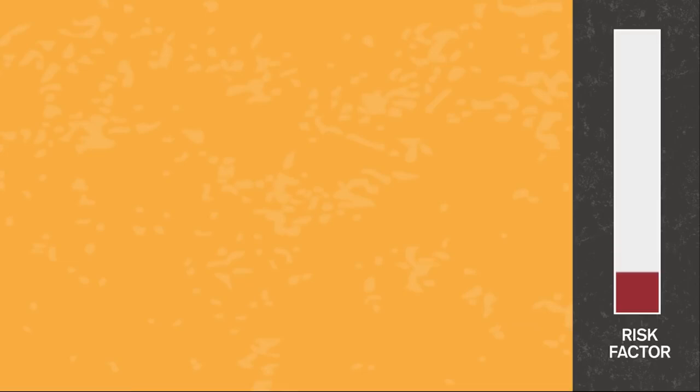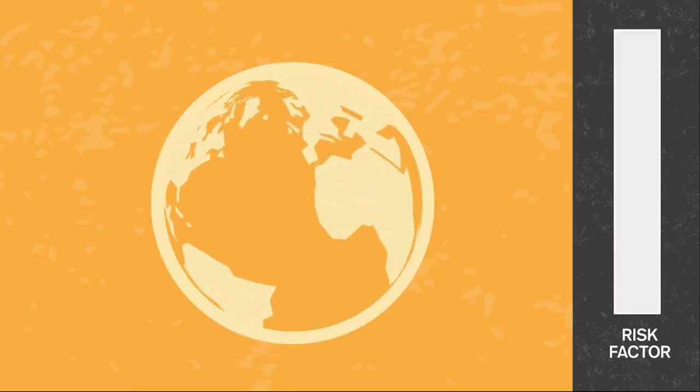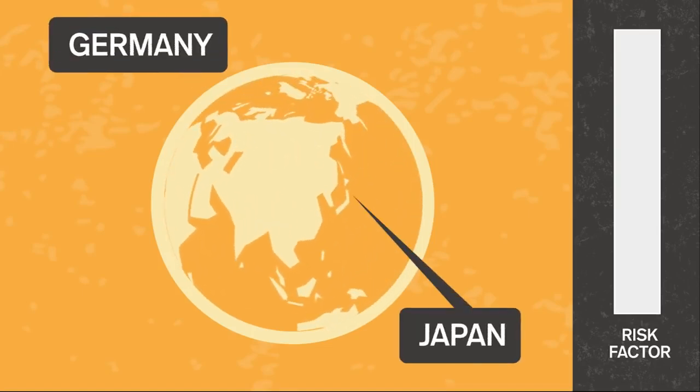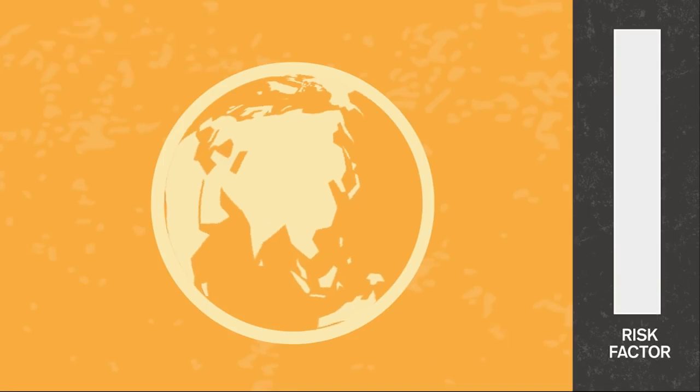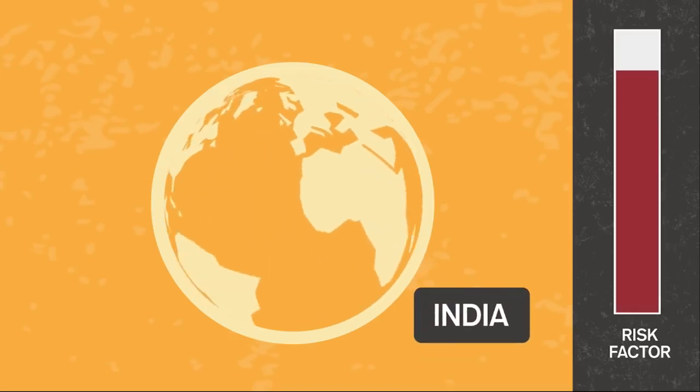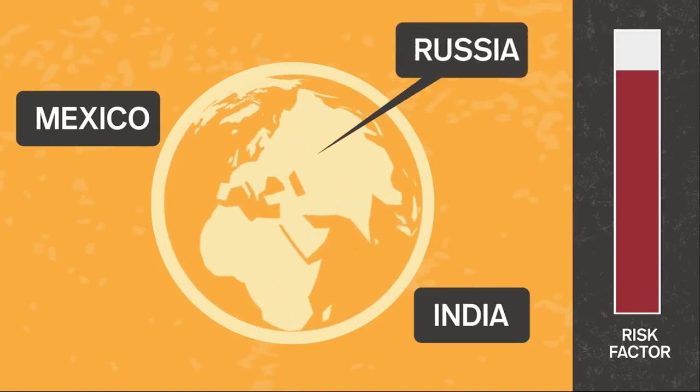Then there's international stock – ownership stock in companies located in developed nations outside the U.S., like BMW in Germany and Sony in Japan. They carry about the same level of risk as U.S.-based large cap stocks. The highest level of risk is found with emerging market stock. This is stock in companies located in developing nations like India, Mexico, and Russia.